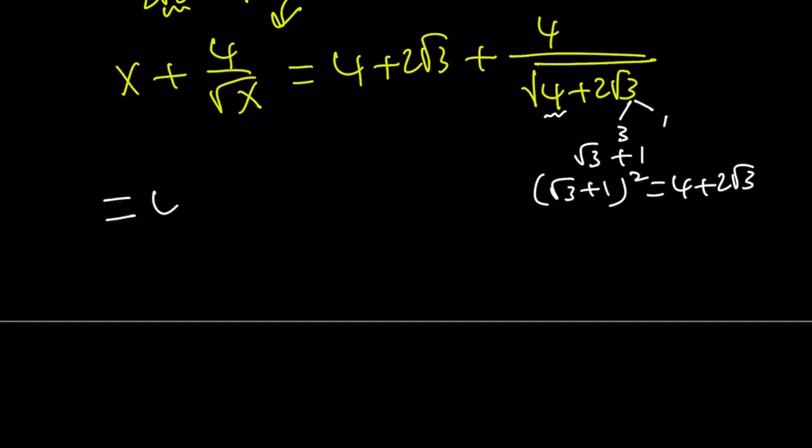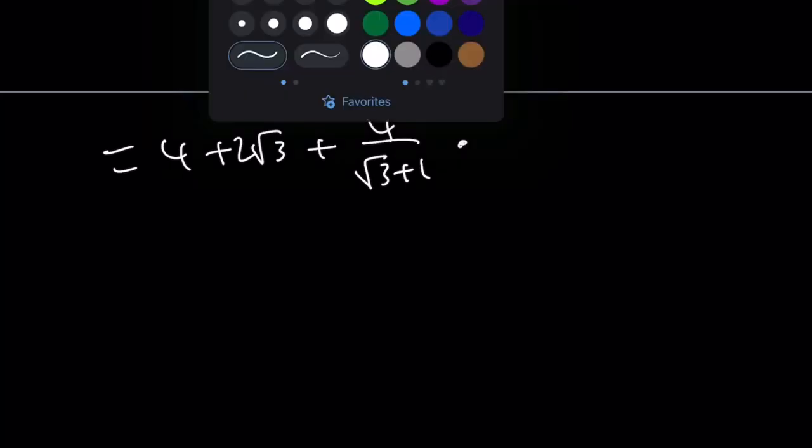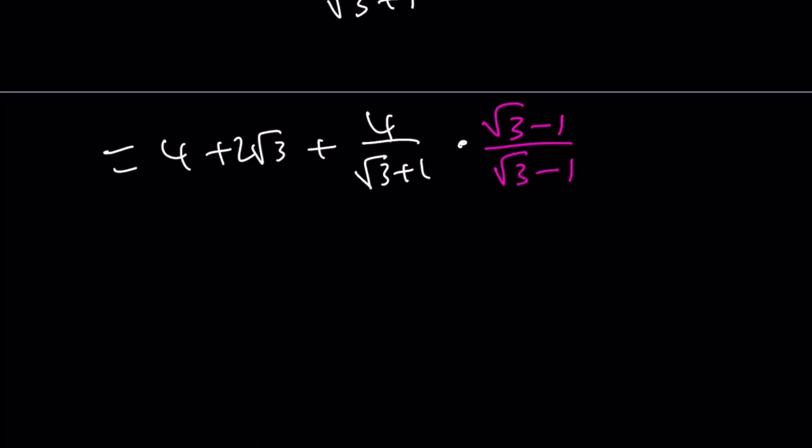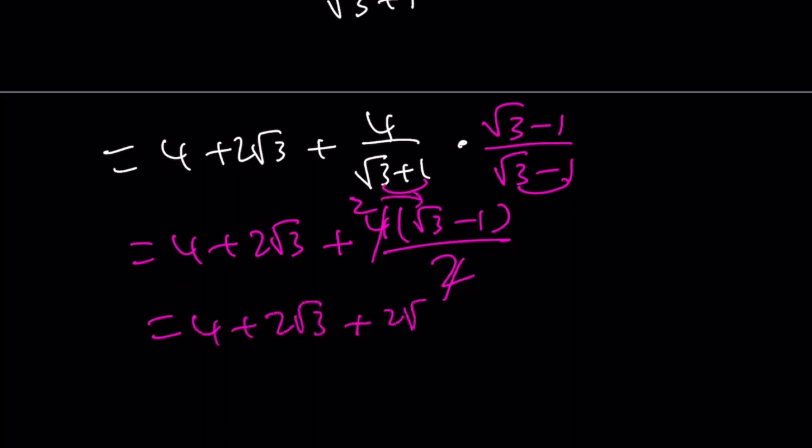So this becomes 4 plus 2 root 3 plus 4 divided by square root of 3 plus 1, which is the square root of 4 plus 2 root 3. All right? Now, let's go ahead and simplify this by using conjugates. Let's go ahead and multiply this by root 3 minus 1 and root 3 minus 1. Now, when you do that, you're going to get 4 plus 2 root 3 plus 4 times root 3 minus 1. This times that is, from difference of two squares, 2. Now, 2 goes into 4 two times. So this gives us 4 plus 2 root 3 plus, if you distribute the 2, 2 root 3 minus 2. And 4 minus 2 becomes 2, and then we get 2 plus 4 root 3 as the answer.